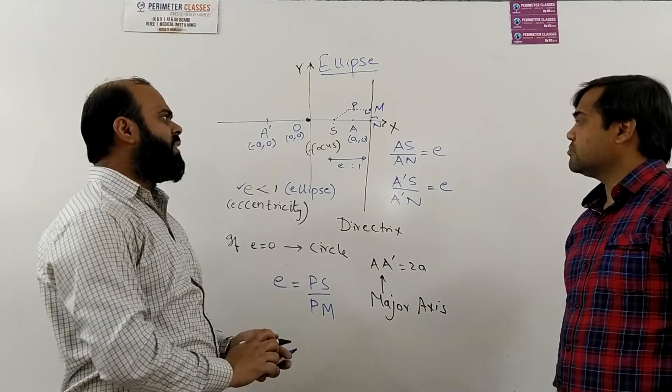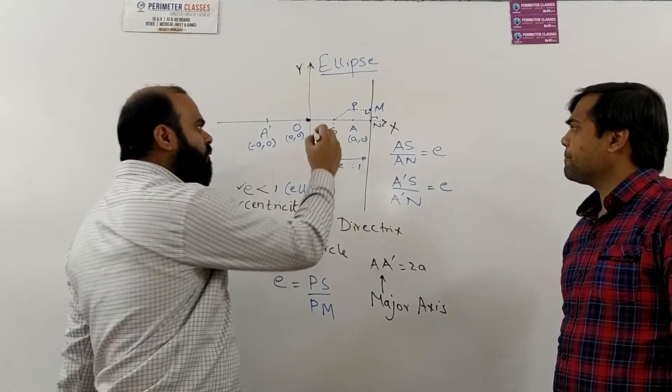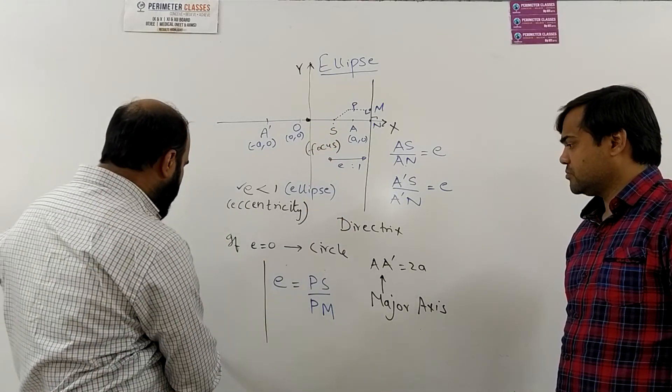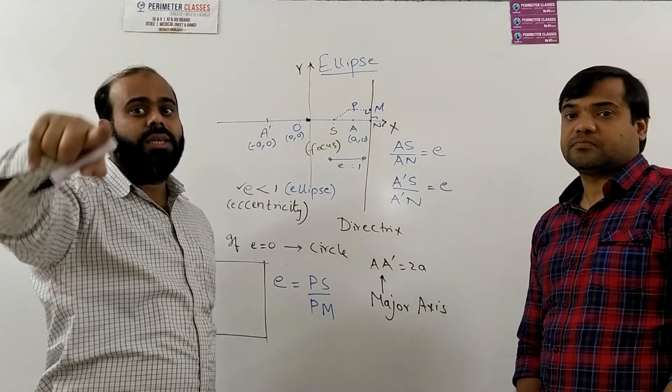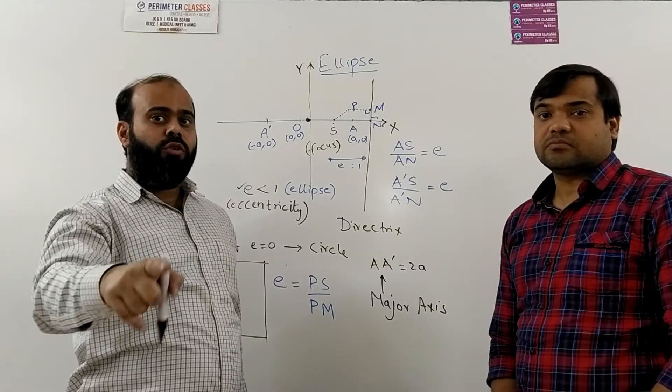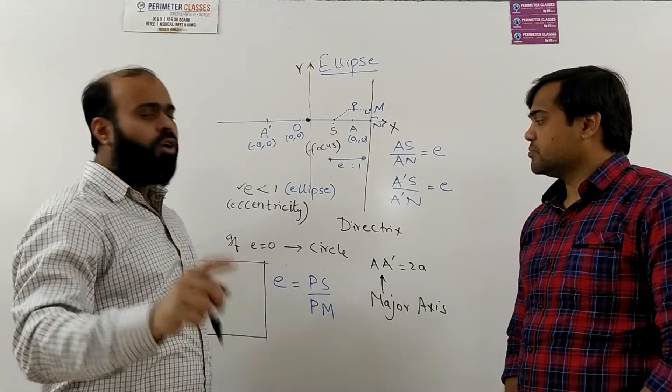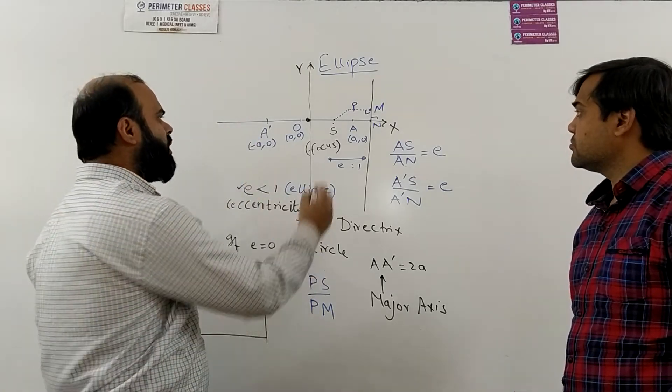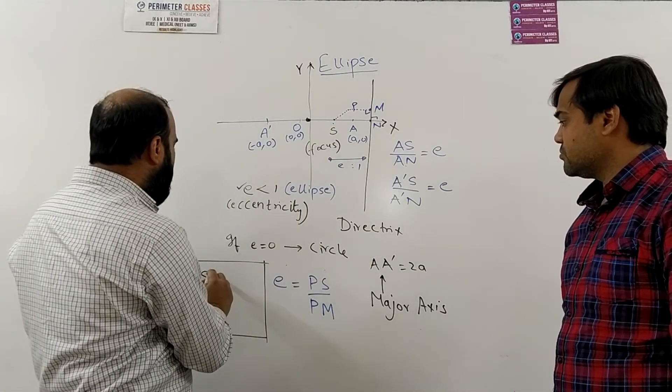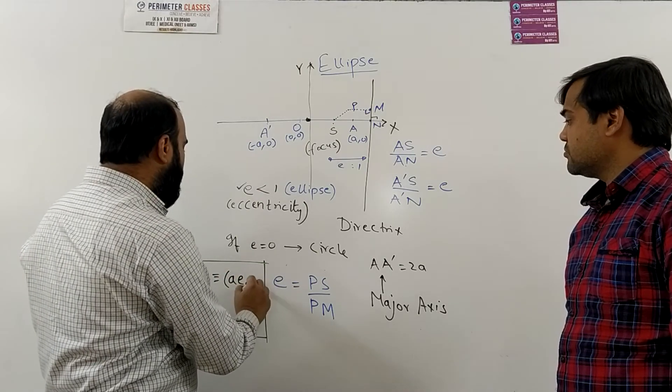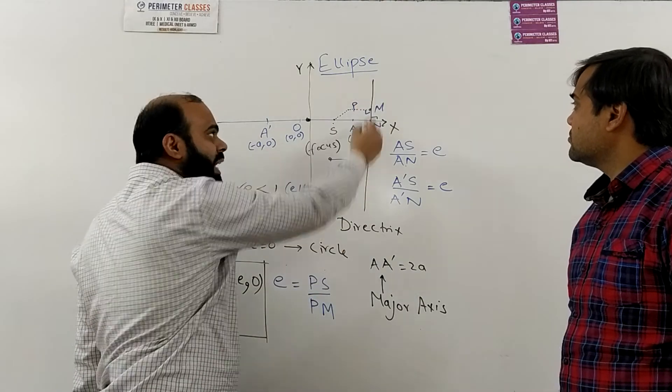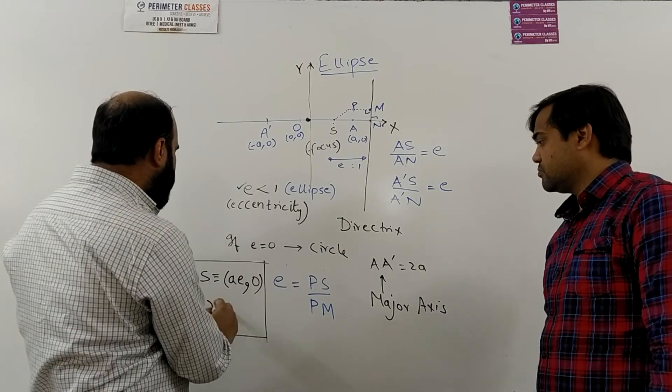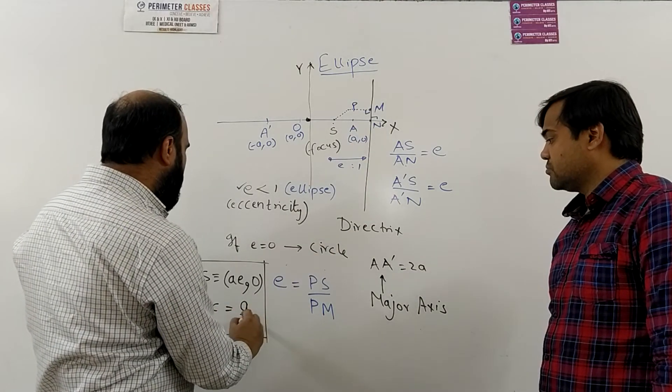Then we find that the focus S—I am not finding it out for you right now, you can see the mathematical portion of our video for the whole derivation. For now I am just giving you the result. So this focus will come out to be (ae, 0), this is the coordinate of this focus. And this directrix will have an equation x = a/e.